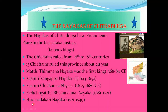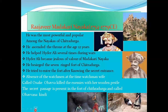Among the kings of Chitradurga: Kasturi Rangappa Nayaka (1630–1652), Kasturi Chikka Nayaka (1675–1686), Bichugatti Baramanna Nayaka (1681–1721), Kire Madakari Nayaka (1721–1749). Rajavira Madakari Nayaka was the most popular and powerful among the Nayakas of Chitradurga.